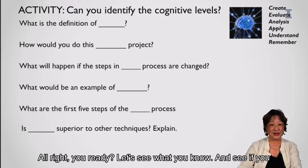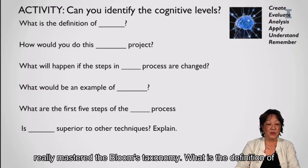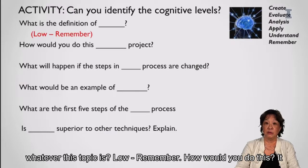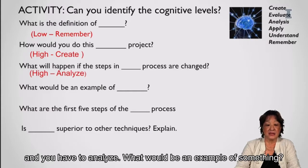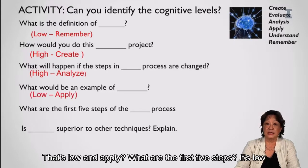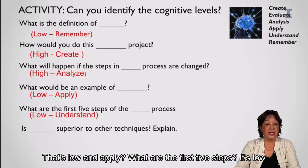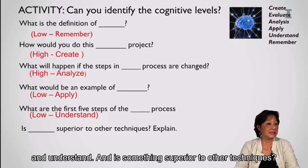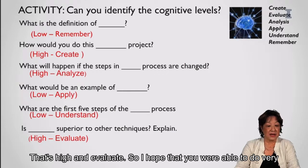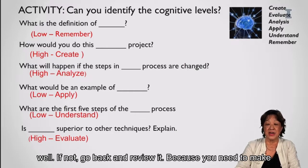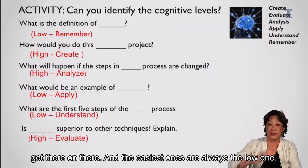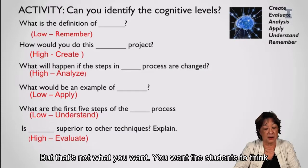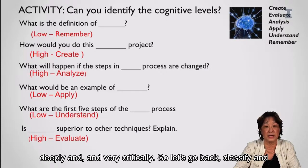Let's see if you mastered Bloom's taxonomy. 'What is the definition?' — low level: remember. 'How would you do this?' — high level: create. 'What will happen?' — high level: analyze. 'What would be an example?' — low level: apply. 'What are the first five steps?' — low level: understand. 'Is something superior to other techniques?' — high level: evaluate. If you didn't do well, go back and review — you need to ask questions at the appropriate level, because you want students to think deeply and critically.